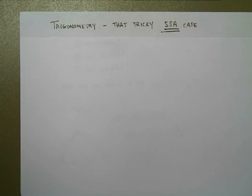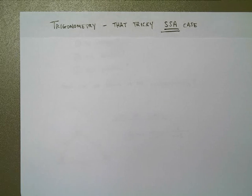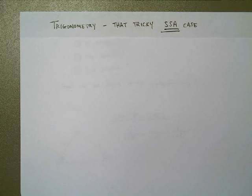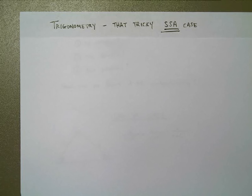In this video, I'm going to be talking about the SSA case — the side-side-angle case for trigonometry when working with triangles. This is the tricky one. If you ever have trouble remembering which case is the tricky one, it's the one whose acronym would be inappropriate if turned backwards. We never say angle side-side for obvious reasons.